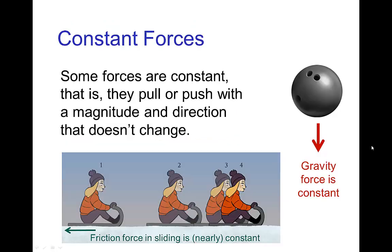There are many situations when we have a constant force — one that pulls or pushes on an object with a constant magnitude and in a constant direction. Two common examples: the force of gravity is a constant force, and it turns out that sliding friction is a nearly constant force. We see this girl sliding to a stop, and the frictional force causing her speed to change is fairly constant. This is actually a result discovered by Leonardo da Vinci.